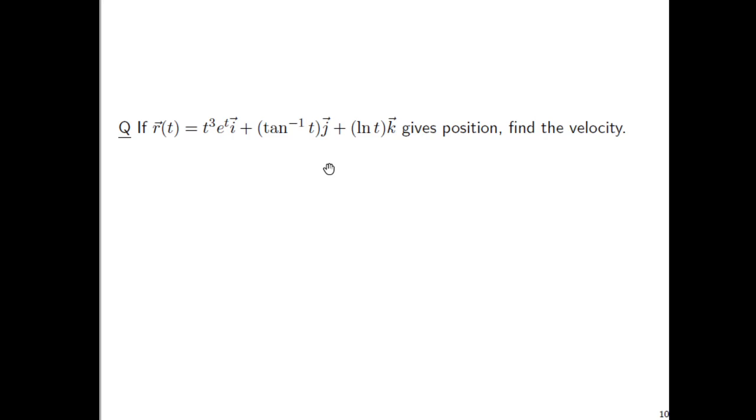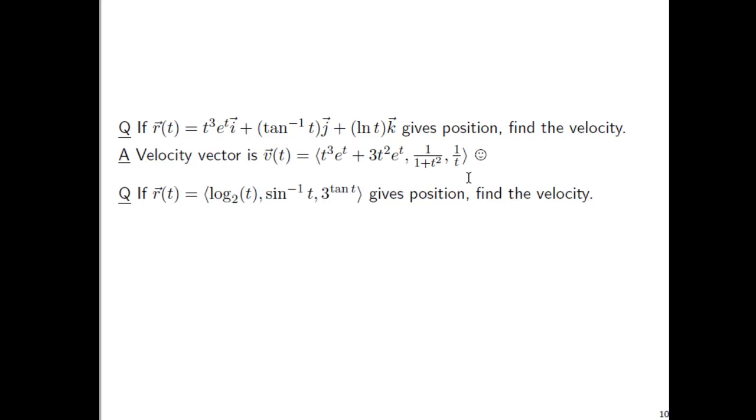Here, again, I'm using this as an excuse to play with this i, j, k notation instead of the angle bracket notation. The velocity vector should look like this. The first term, I'll just say you need the product rule. And remember that e to the t is its own derivative.